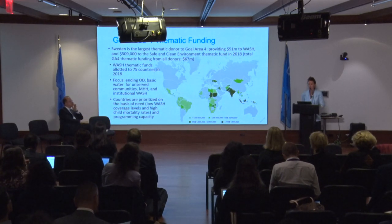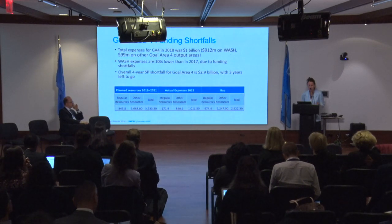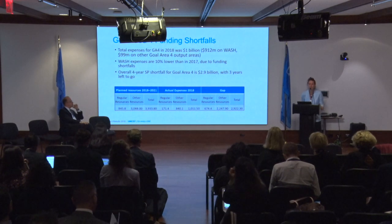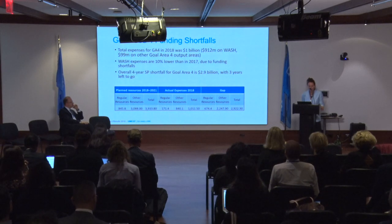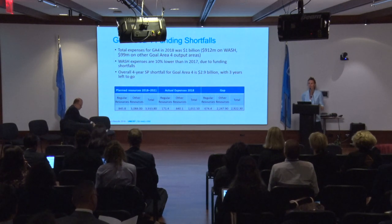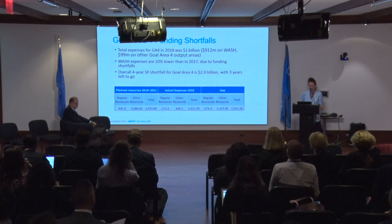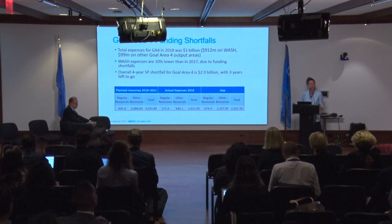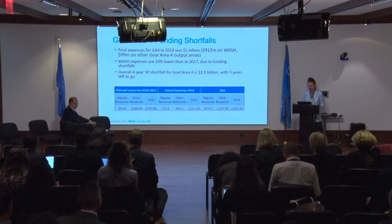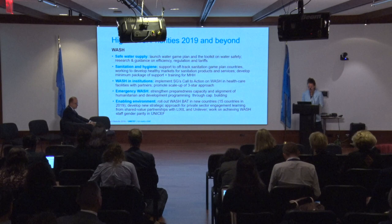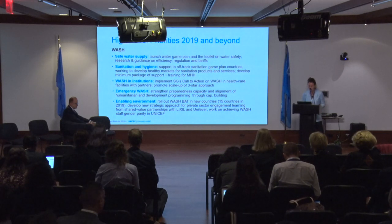We are actively fundraising, particularly to support scaling up new areas of programming. Our first year we had a total budget of $912 million for WASH — approximately 51% humanitarian and 50% development funds. Funding did go down from 2017 by about 10%. We're estimating a total funding gap for the goal at $2.9 billion for the three years left in the program.